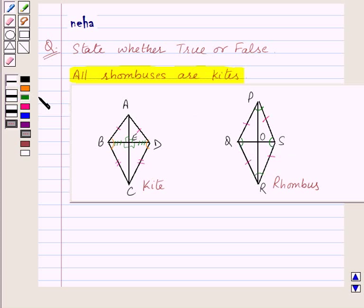Also the diagonals bisect each other. That is, all these angles are 90 degrees each.